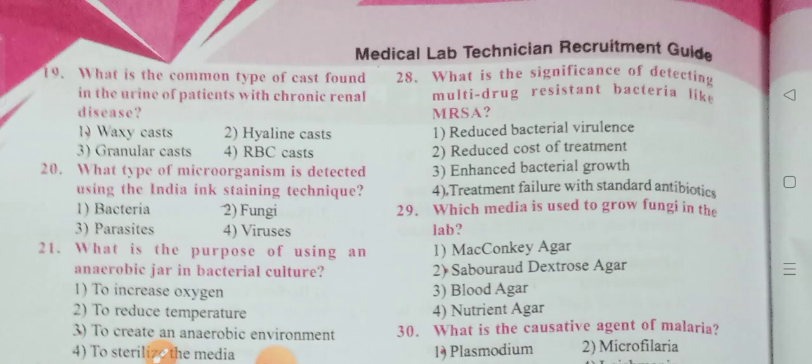19th question: What is the common type of cast found in the urine of patients with chronic renal disease? The options are: waxy cast, hyaline cast, granular cast, and RBC cast. Option one, waxy cast, is the correct answer.